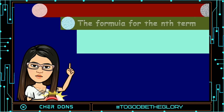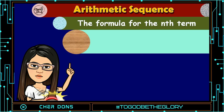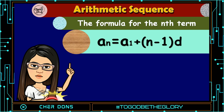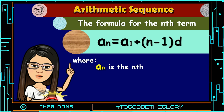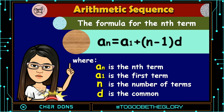The formula for the nth term of an arithmetic sequence is: a sub n is equal to a sub 1 plus quantity n minus 1 multiplied by d, where a sub n is the nth term, a sub 1 is the first term, n is the number of terms, and d is the common difference.